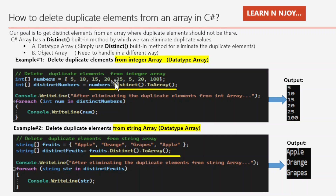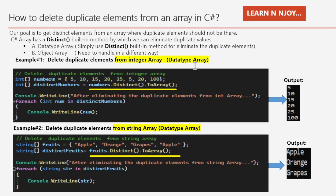Then I am iterating with the help of a foreach loop — for each int num in distinctNumbers — and printing to the console window using Console.WriteLine(num). It will give the distinct values, and if you see the output shown on the right-hand side, the values coming are 5, 10, 15, 20, 25, 100. So 5 and 20, which were the duplicate entries, got removed and we are getting only distinct values. That's how we remove duplicate elements from an integer array.